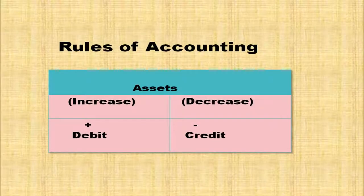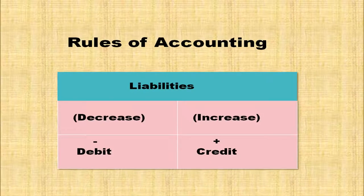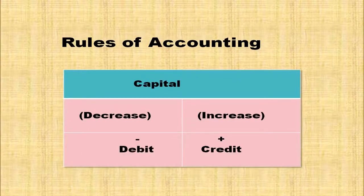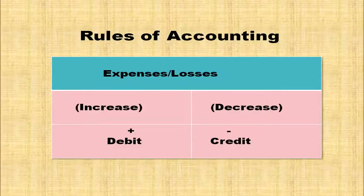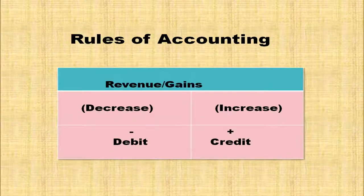Looking at the slide summary: Asset — when increased, it is debited; when decreased, it is credited. Liabilities — when increased, it is credited; when decreased, it is debited. Capital — when increased, it is credited; when decreased, it is debited. Expenses — when increased, it is debited; when decreased, it is credited. Income or revenue — when increased, it is credited; when decreased, it is debited.